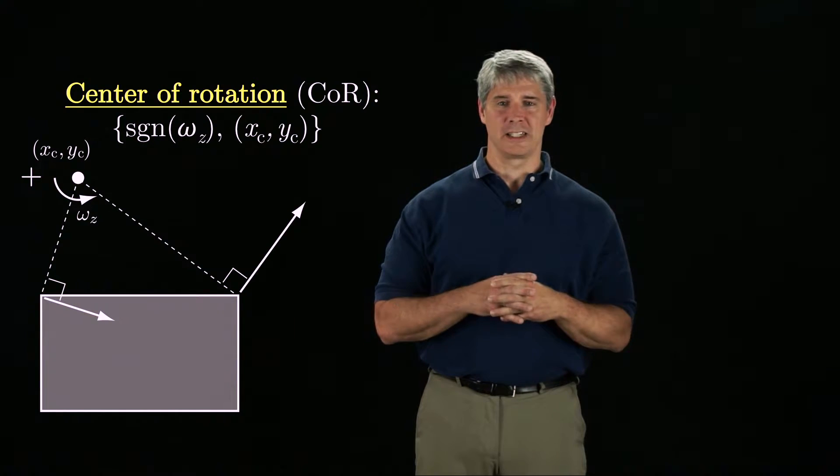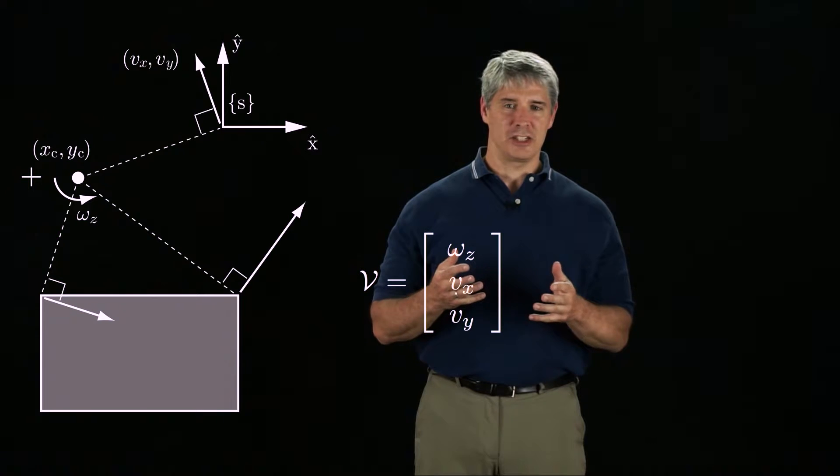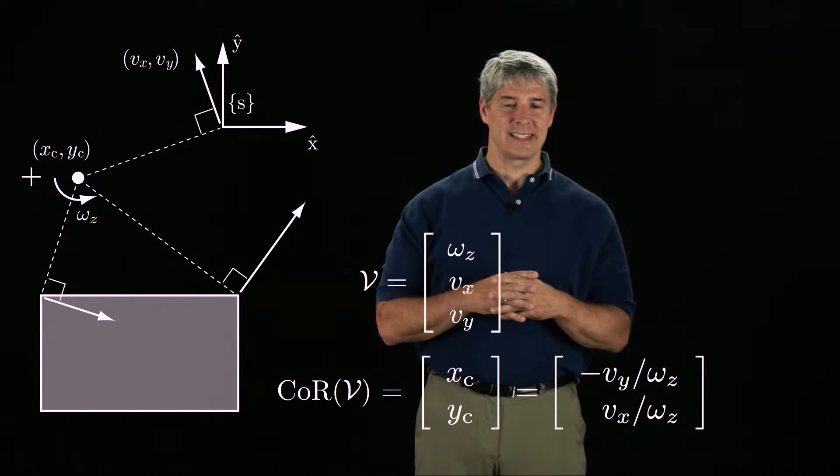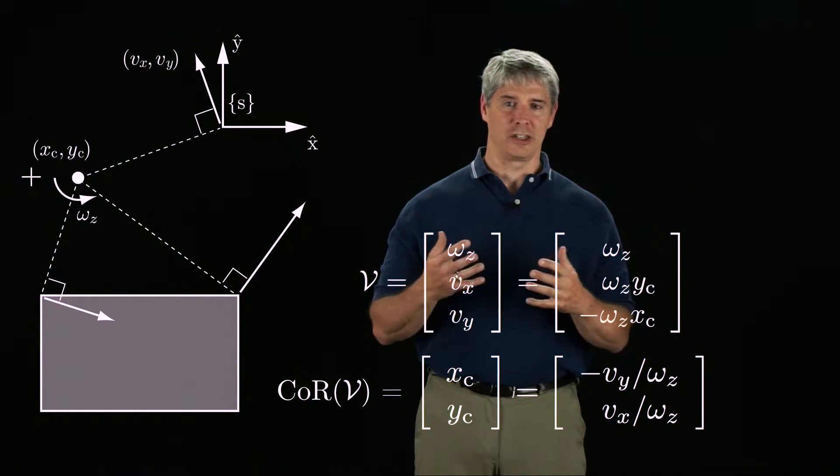The motion could also be expressed as a planar twist v in the fixed space frame. Given this twist, we can calculate the point xc, yc, and given xc, yc and omega z, we can calculate the twist.